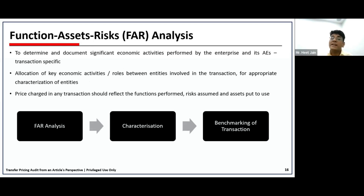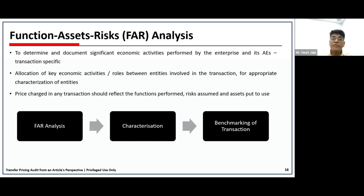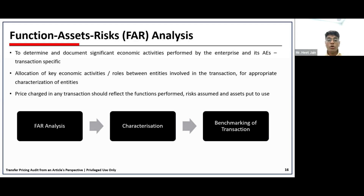Once an international transaction is identified, the next important step is functional analysis — FAR analysis: Functions, Assets, and Risks. FAR analysis is basically analyzing the significant economic activities performed in a transaction. It's a transaction-specific approach where you analyze what functions are performed by both the Indian associated enterprise and the foreign associated enterprise. This is important to allocate what functions, assets, and risks are borne by individual enterprises, because this characterization becomes the standpoint to determine what type of profit the entities are supposed to earn.